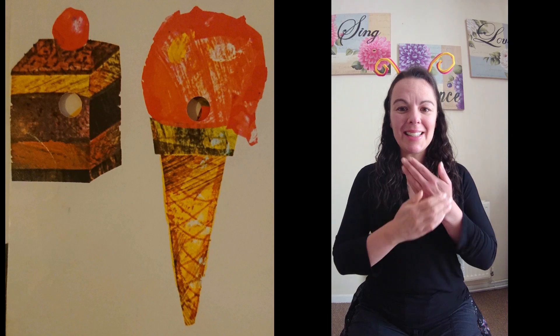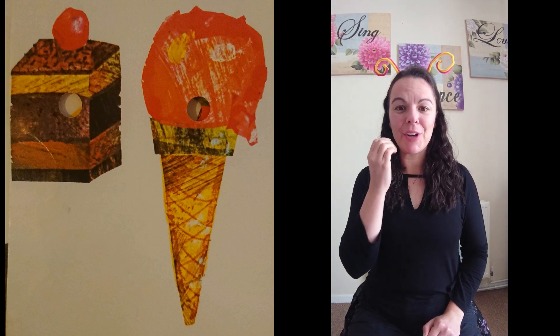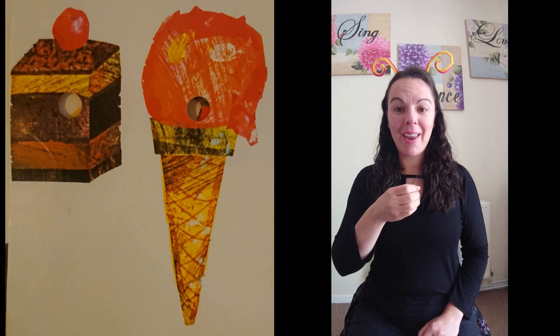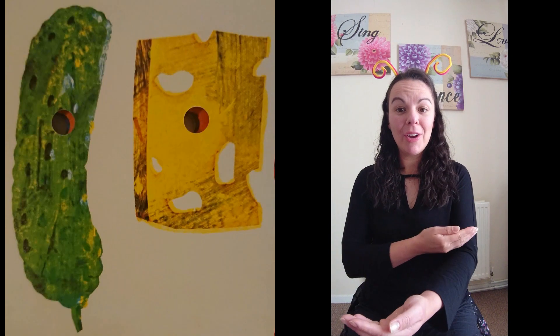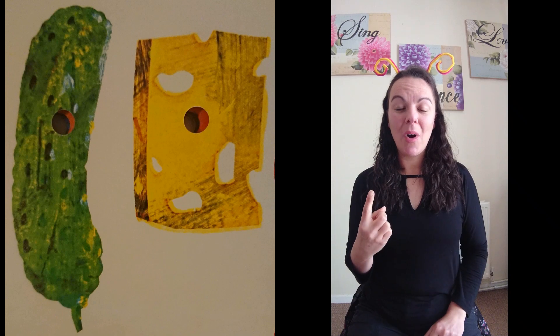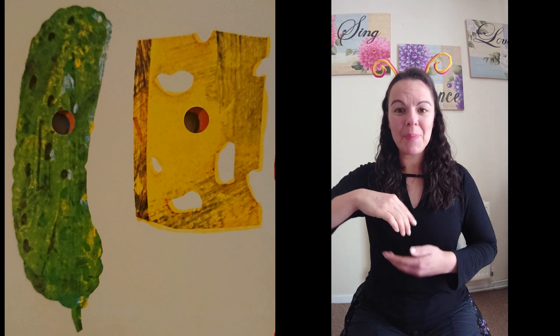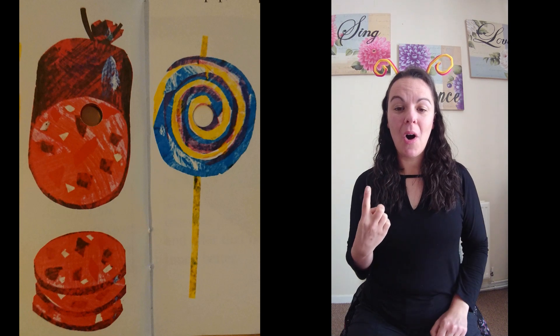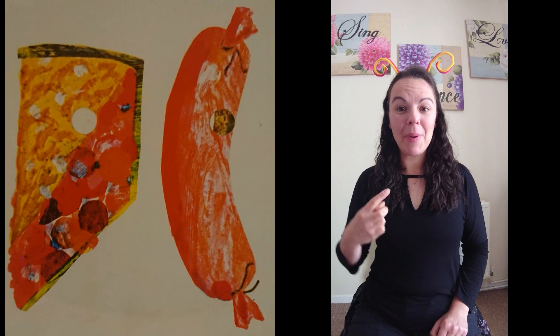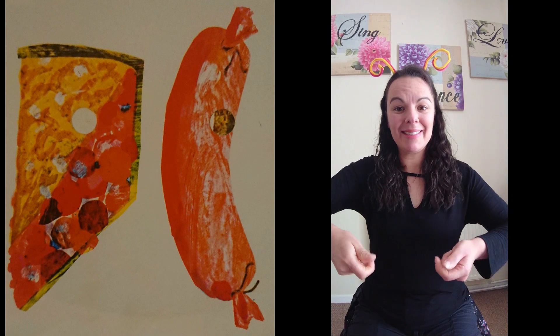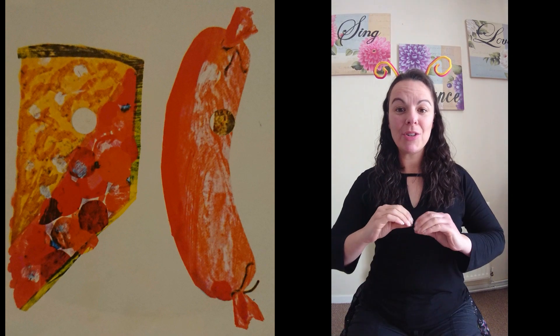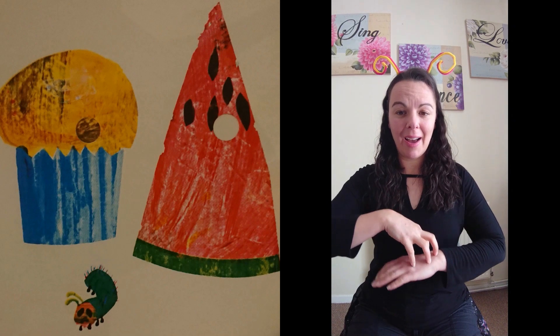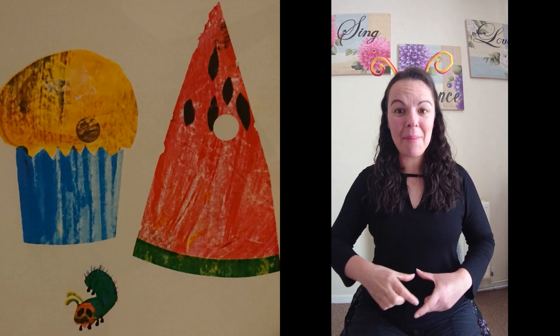On Saturday he ate through one piece of chocolate cake, one ice cream cone, one gherkin, one slice of Swiss cheese, one slice of salami, one lollipop, one piece of cherry pie, one sausage, one cupcake, and one slice of watermelon.